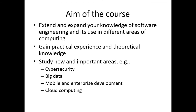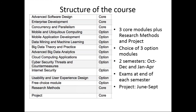This slide shows some of the topics offered as part of the degree, with the right-hand column showing which ones are core and which are optional. The core options include Advanced Software Design — which I teach, covering software design using formal notation, in this case UML — and also software testing frameworks and software quality metrics. Then there are subjects like enterprise development and concurrency and parallelism, which you might think of as fairly traditional software engineering subjects.